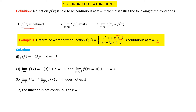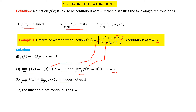Replacing x with three gives minus five. For condition two, the limit must exist, so we find the left-hand limit and the right-hand limit. The left-hand limit equals minus five and the right-hand limit equals four — using the first function for the left-hand limit and the second function, 4x minus 8, for the right-hand limit. Since both limits are not equal, the limit does not exist, and therefore the function is not continuous at x equal to three.